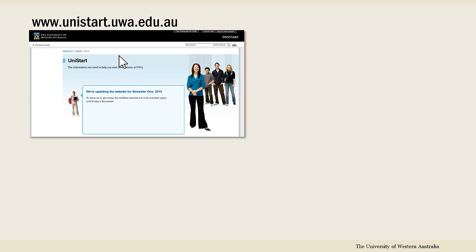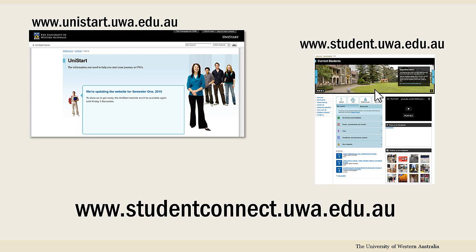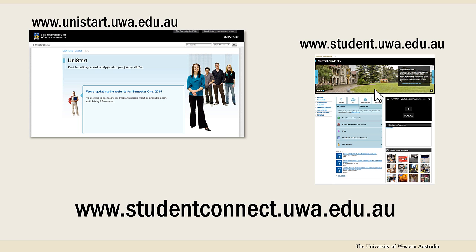You can access the UWA enrolment system, Student Connect, via the Unistart website or the current student's homepage, and log in with your student number and FEMI password.